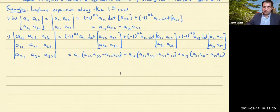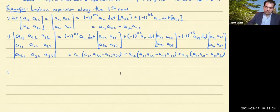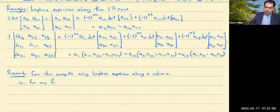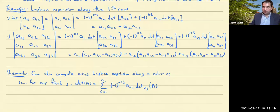You can also compute the determinant using the Laplace expansion along a column. That is, for any fixed j, the determinant equals the sum over i from 1 to n of (-1)^(i+j) · a_ij · det_ij(A) — the same formula, except now we sum over the i's instead of the j's.